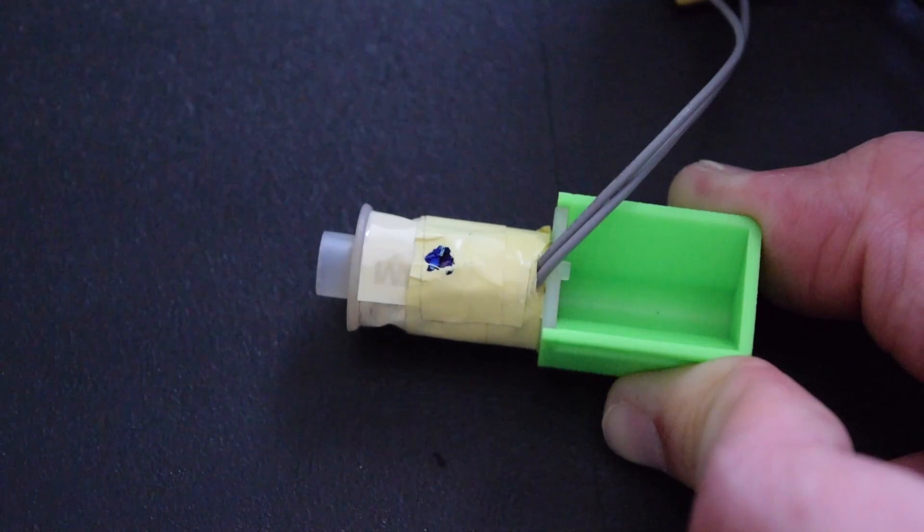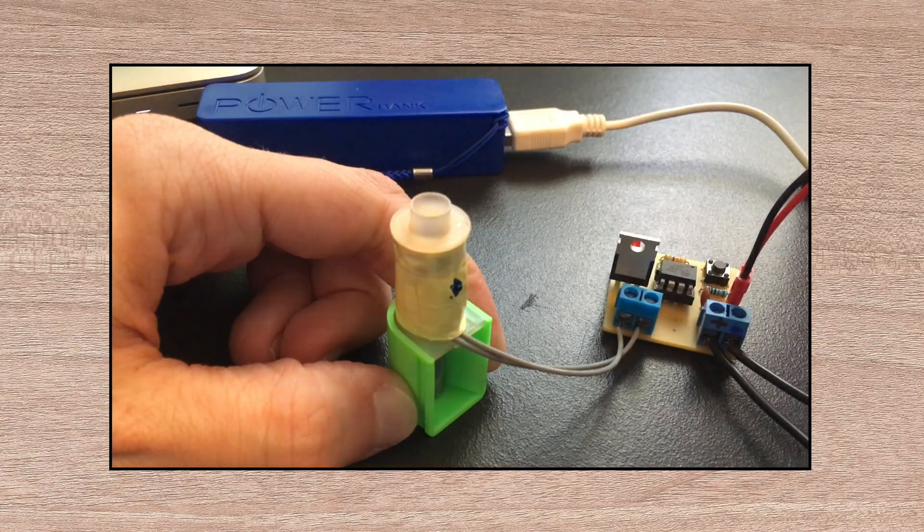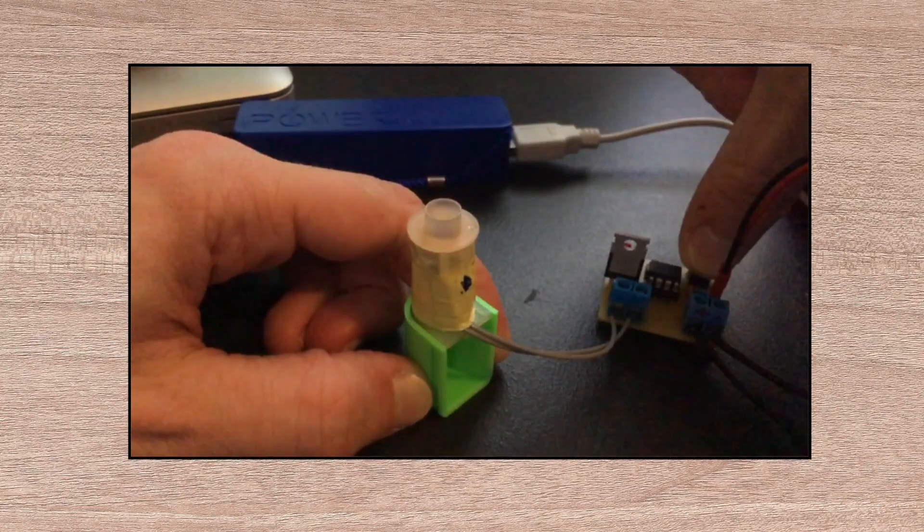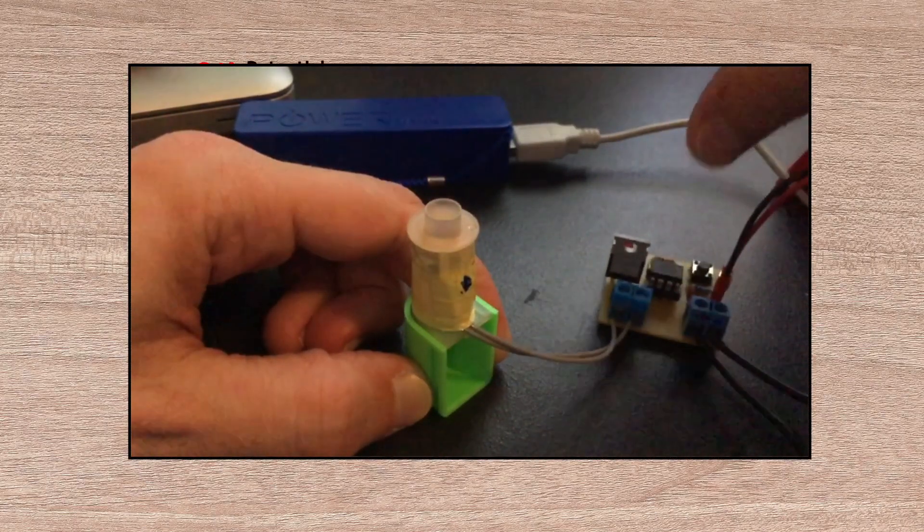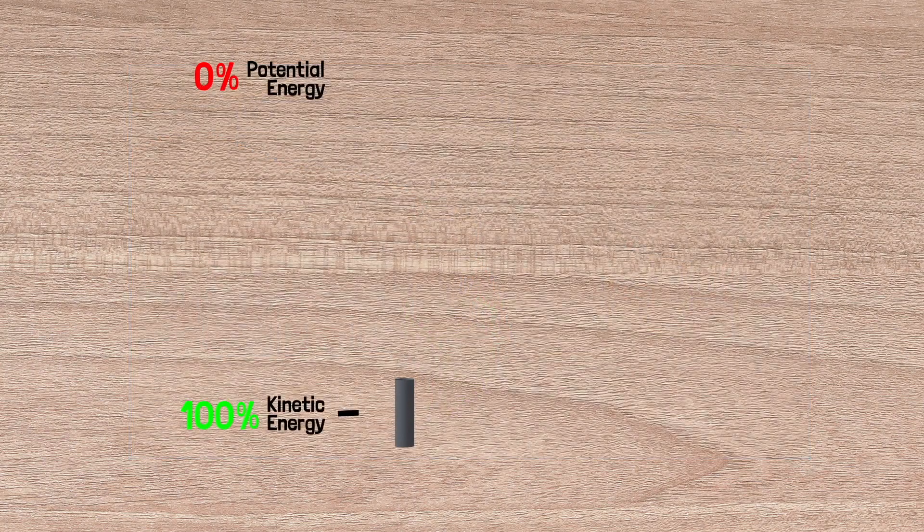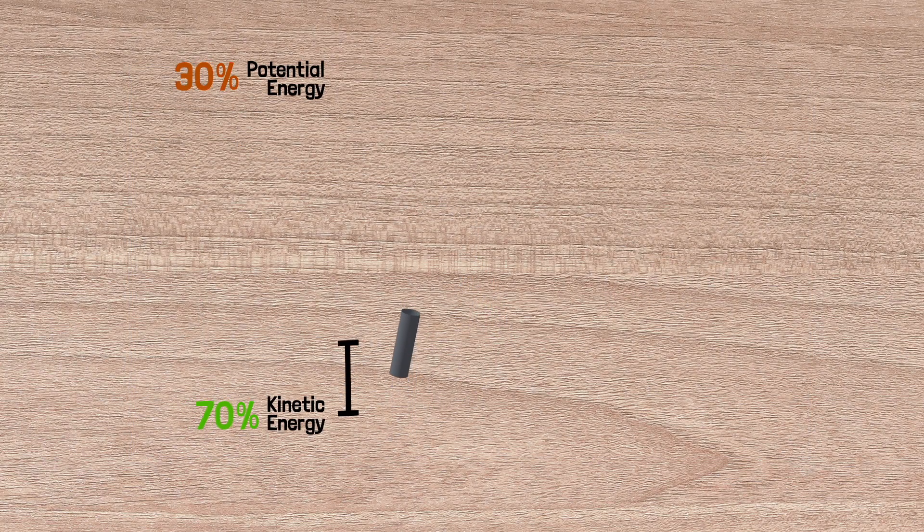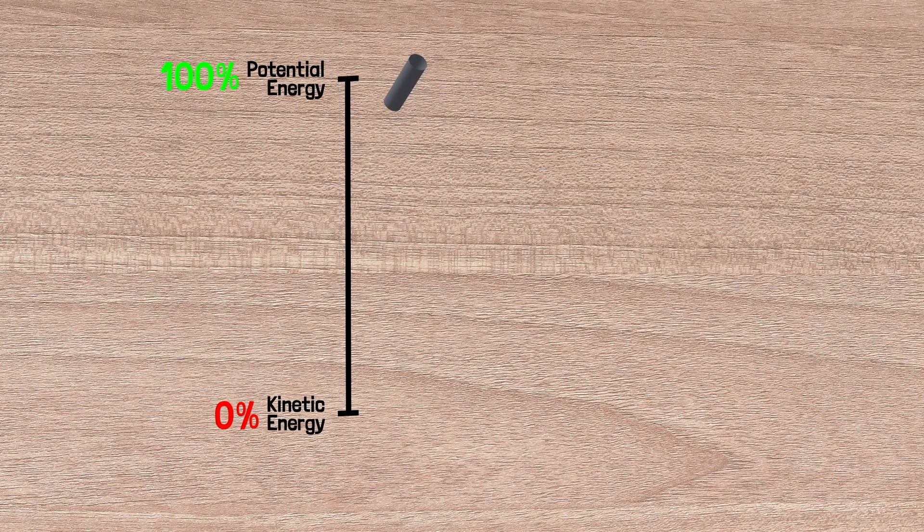I'm interested to find out how fast the projectile is moving when it leaves the coil, and I've worked out an easy way to do this. If I fire the projectile straight up, all I have to do is measure the height. This works because initially, the projectile has only kinetic energy, and then at the very top, it has only potential energy from gravity. Kinetic energy is given by the formula ½mv², and potential energy is given by the formula mgh. By setting these equal, we can cancel out the mass and rearrange it in terms of velocity.